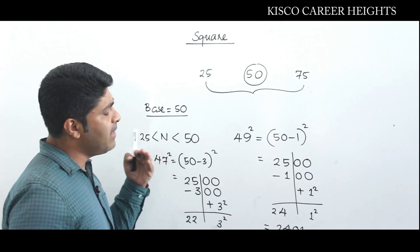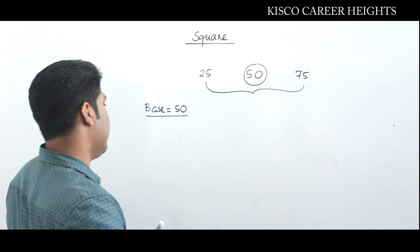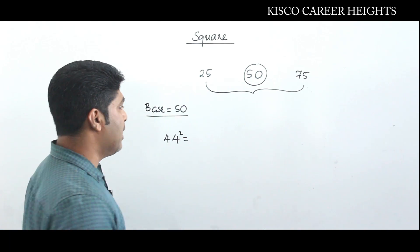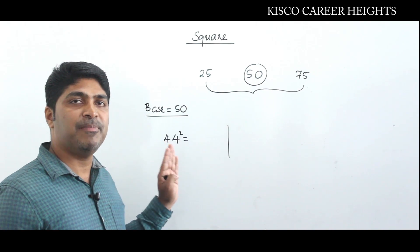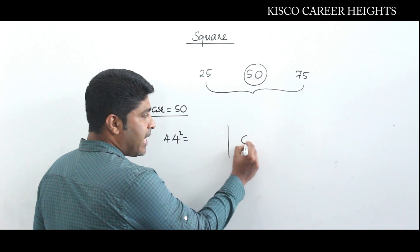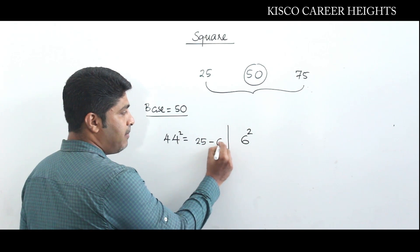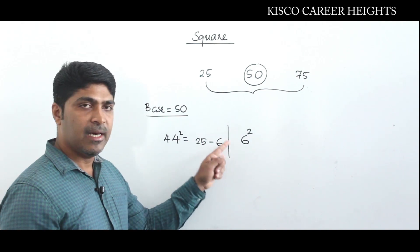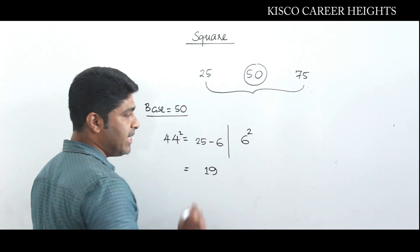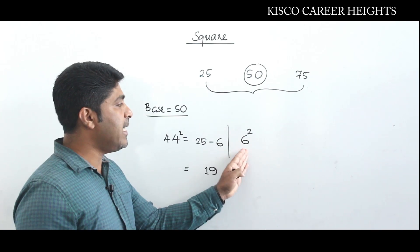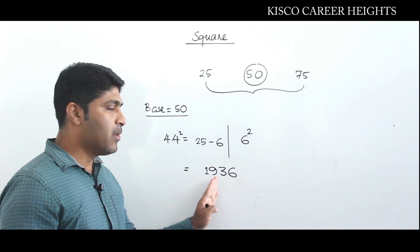We can expand this concept further. Consider 44². The complementary of 44 with respect to 50 is 6. Therefore, the right side of our answer is 6² = 36 — which is already a 2-digit number. The left side is 25 minus 6 = 19. So the final answer is 1936. Therefore, 44² = 1936.